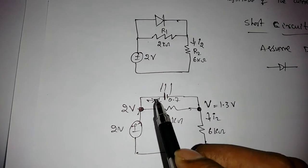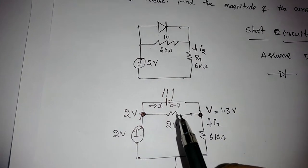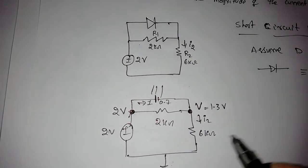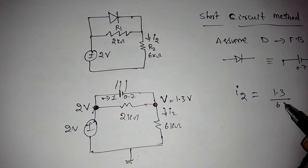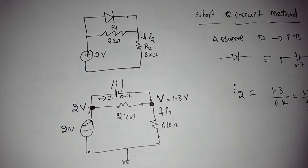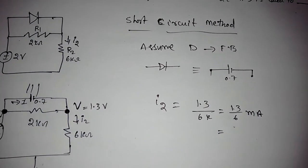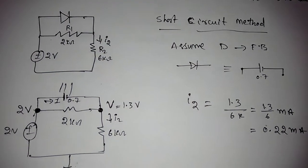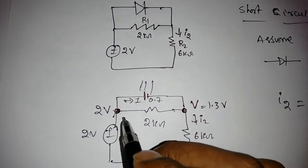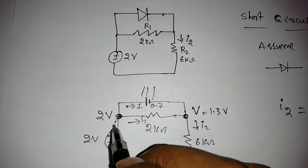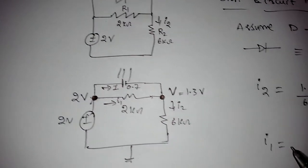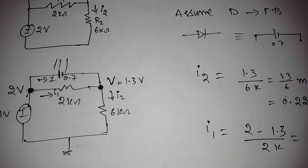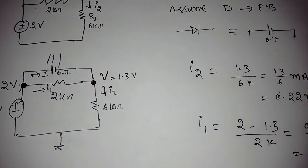Now we find the currents. When current I is positive the diode is in forward bias. I2 is simply V divided by 6 kΩ, so I2 equals 1.3 divided by 6 kΩ, which gives 0.22 mA. For I1, it equals 2 minus 1.3 divided by 2 kΩ, which is 0.7 divided by 2 kΩ, giving 0.35 mA.